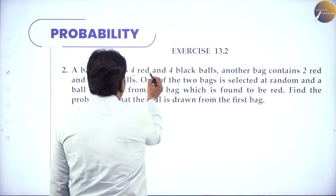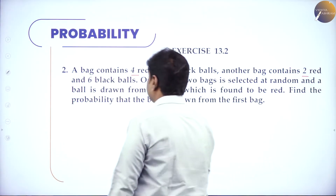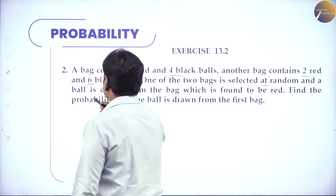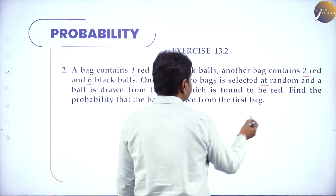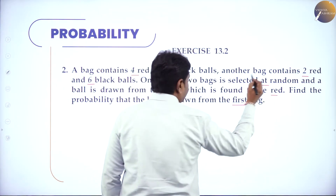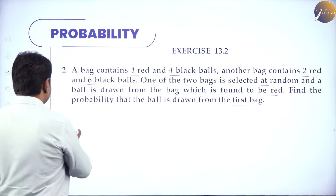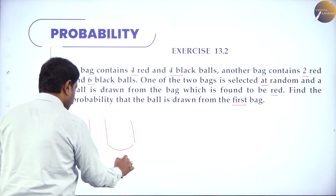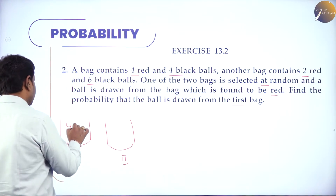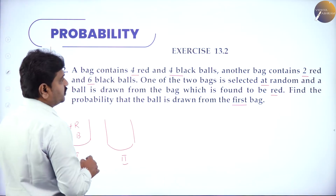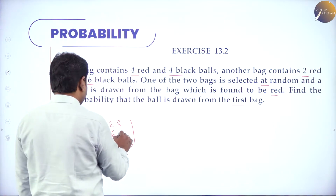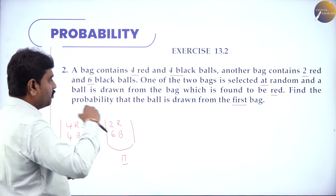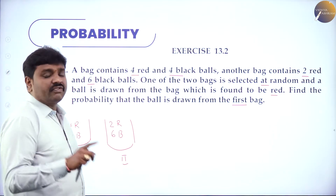A bag contains 4 red and 4 black balls. Another bag contains 2 red and 6 black balls. One of the bags is selected at random, and the ball drawn from the bag is found to be red. What is the probability that it is from the first bag? In this experiment there are two bags. Bag 1 has 4 red and 4 black. Bag 2 has 2 red and 6 black. Any one bag is selected and a ball is drawn — that ball is red. What is the probability it came from the first bag?